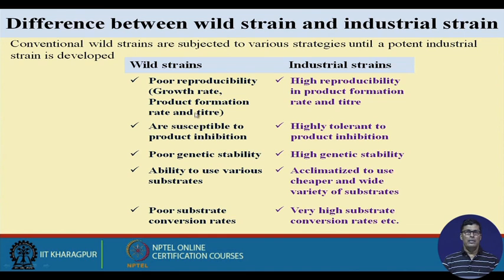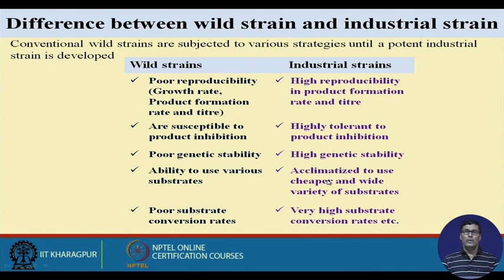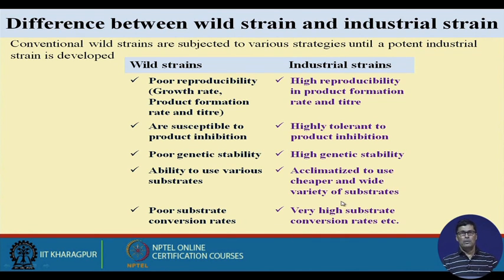The organism should have osmo-tolerance, and industrial strains have the capability to withstand high osmotic shock. Wild strains also have poor genetic stability, whereas industrial strains have high genetic stability. Industrial strains can use a wide variety of cheaper substrates, while wild strains have poor substrate conversion rates. Industrial strains have very high substrate conversion rates.